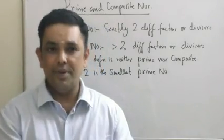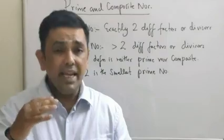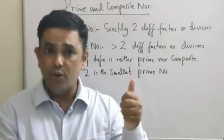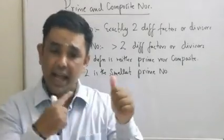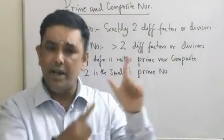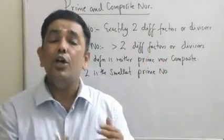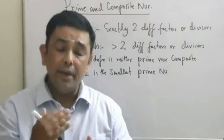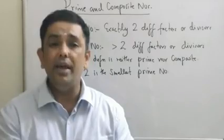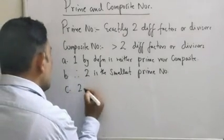Two is the only even number which is also prime. Please try to understand — it's absolutely logical. Any number, if it is even, will be divisible by 2. Every number will be divisible by 1 and by itself. So every other even number other than 2 will automatically be a composite number.